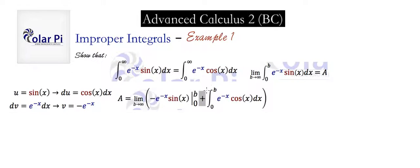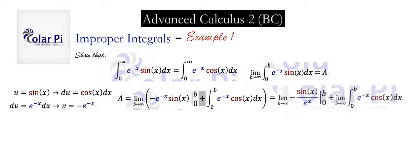Since this is of the form u dv, the integral of u dv equals u v minus the integral of v du. The limit as b goes to infinity of the integral from zero to b of e to the minus x sine x dx equals this. We distribute the limit to apply to both parts. And putting the e to the minus x in the denominator with sine x as the numerator — that step here is the correct next step.